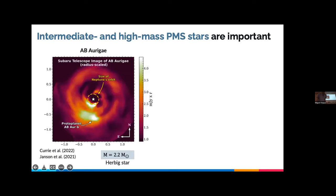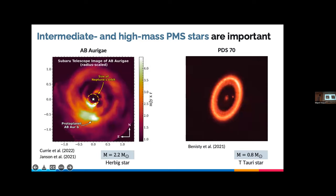To further illustrate that Herbig stars are important for planet formation, consider the case of AB Aurigae — a Herbig star in whose disk a protoplanet has recently been discovered. This is important because we know over 5,000 exoplanets but only a handful of forming protoplanet candidates. The only other confirmed detection is PDS 70, a T Tauri star in which a few protoplanets have been discovered. We've even been able to see a circumplanetary disk around one of those planets, which may or may not lead to formation of exomoons. This illustrates why Herbig stars, despite being much lower in number due to the initial mass function, are quite important for studying planet formation mechanisms.